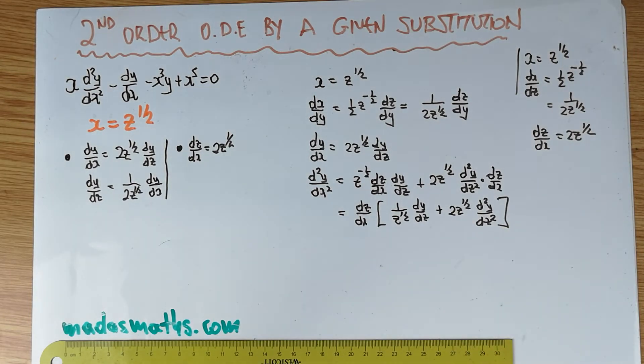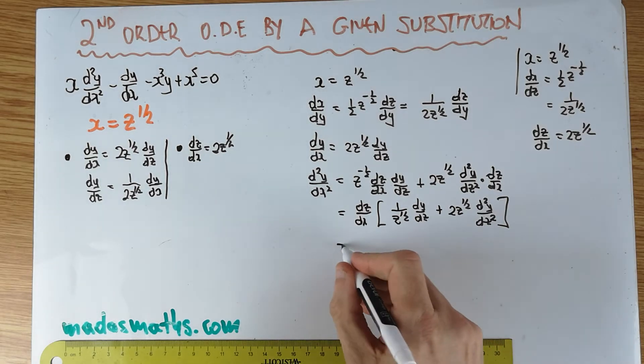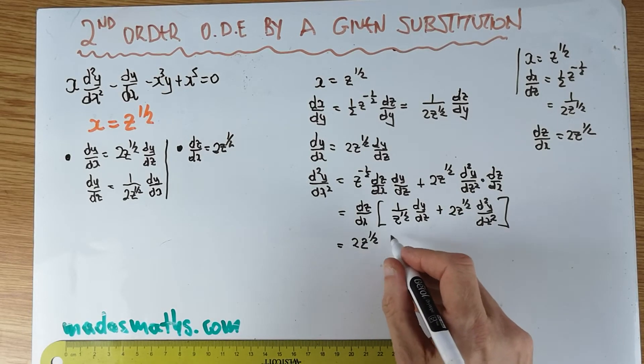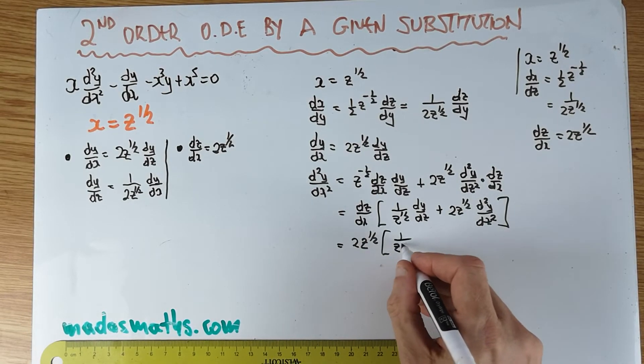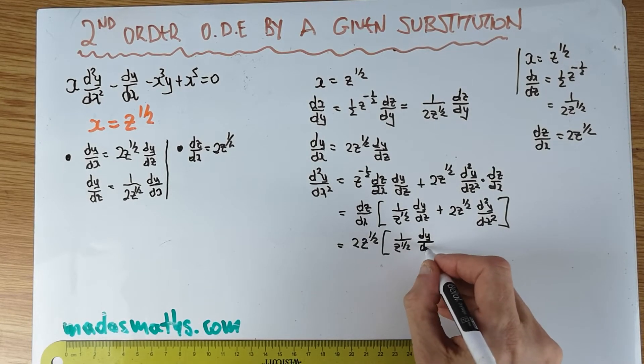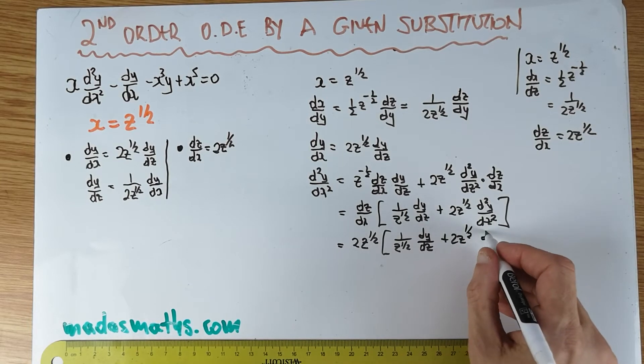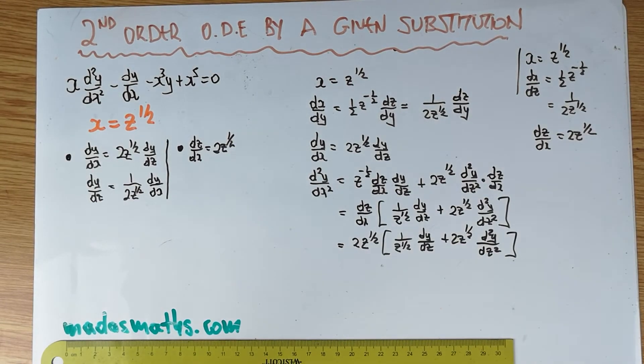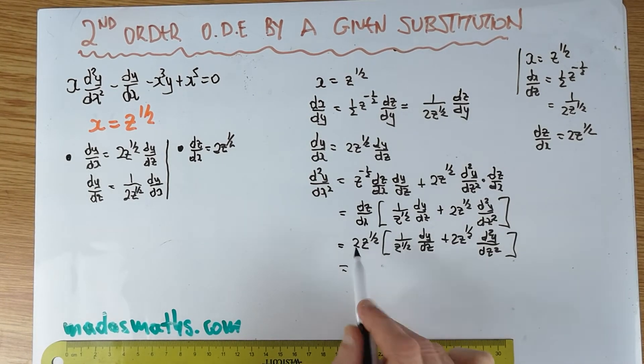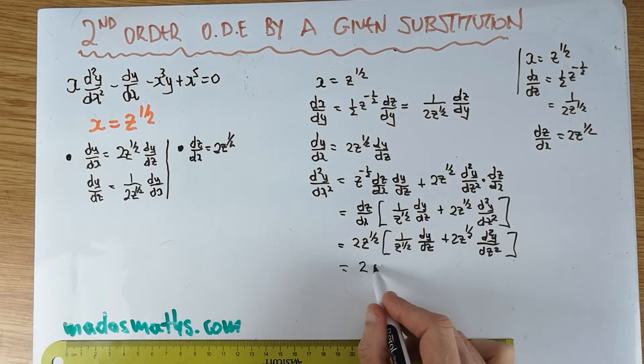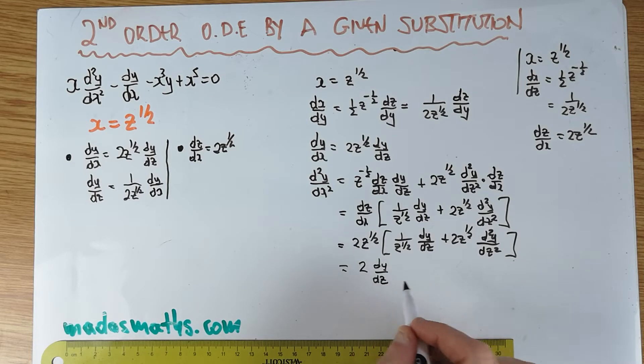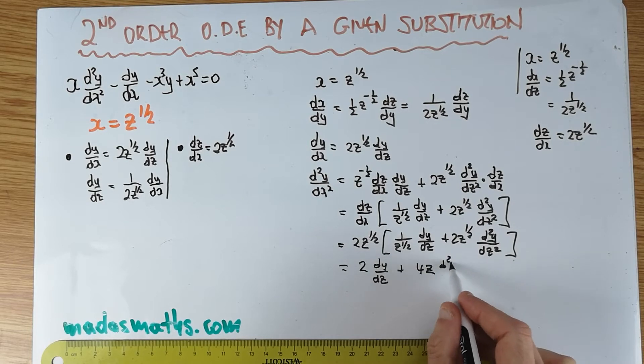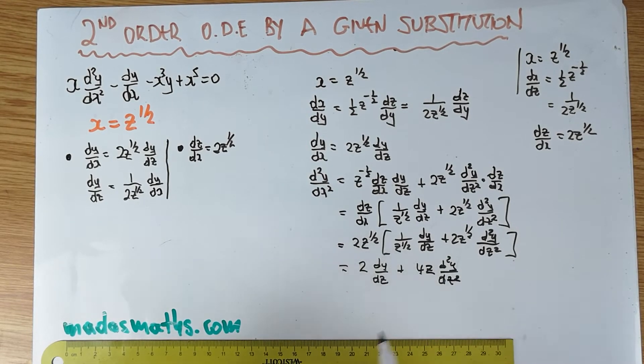And we're still tidying this up now. So that's going to be equal. dz by dx is 2 z to the half. 1 over z to the half. dy by dz. Plus blah, blah, blah. Careful, we don't accidentally write an x for a z and then it's all curtains. Equal. 2. This will cancel. dy by dz plus 4 z second derivative of y with respect to z.